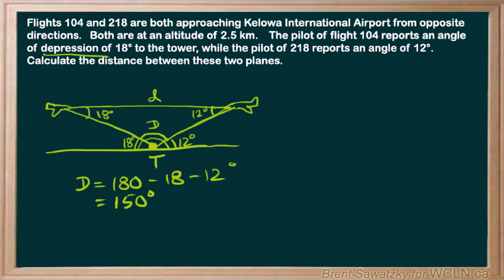Let's name some things. The 18-degree angle up here is capital A, and the 12-degree angle is capital B. Then across from angle A would be side A, and across from angle B would be side B. We need to figure out one of these sides — A or B — in order to come up with a pair and use our sine law.